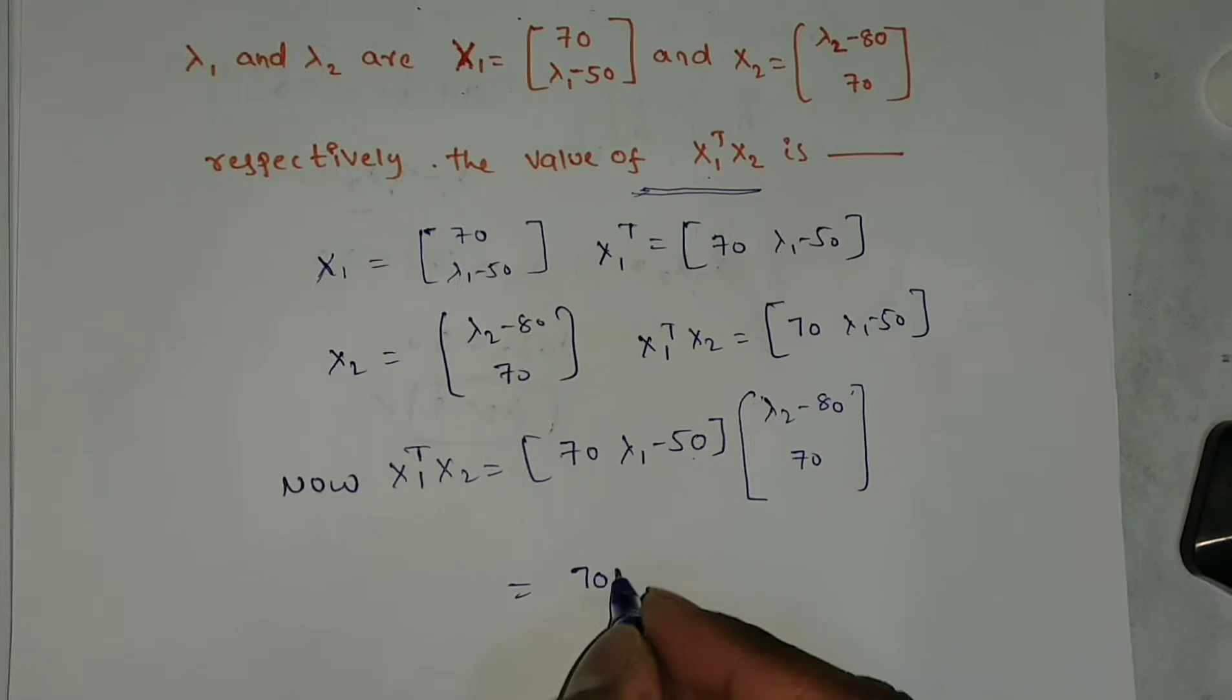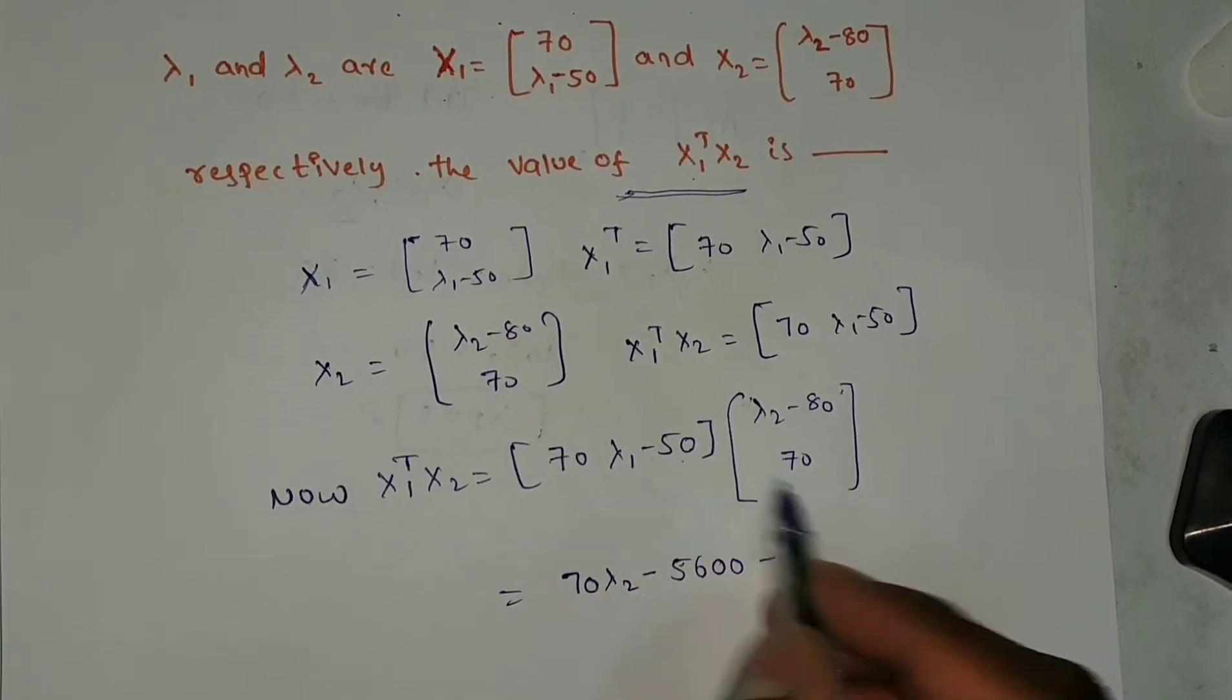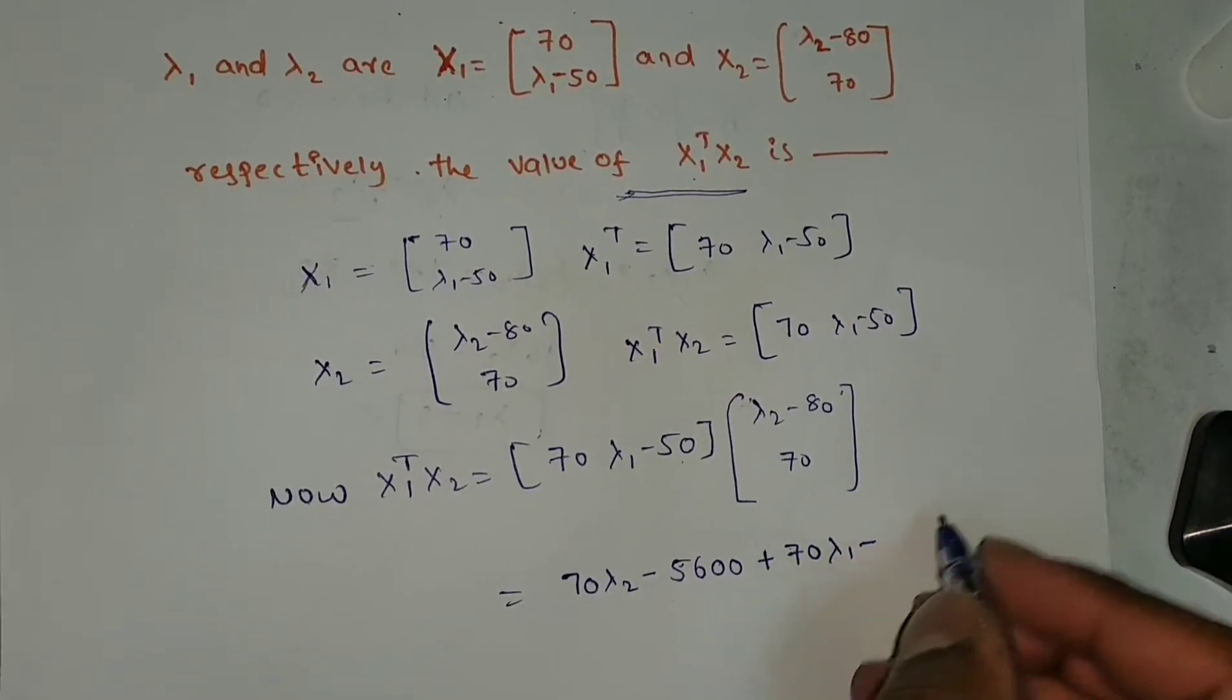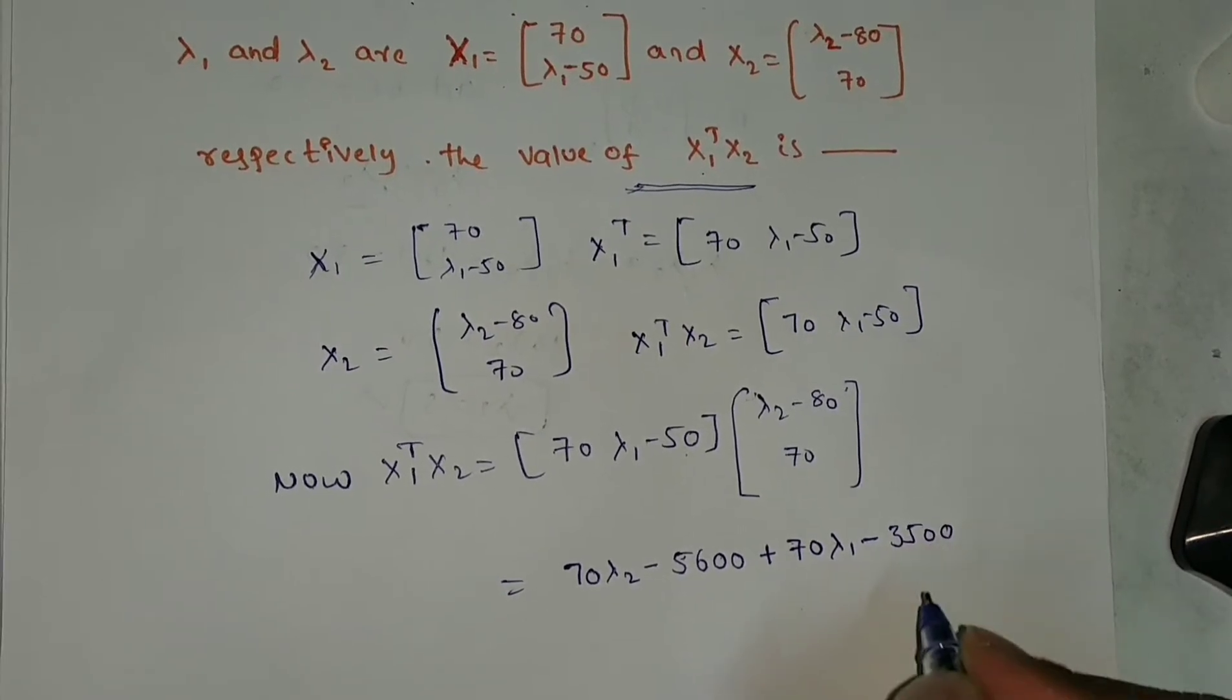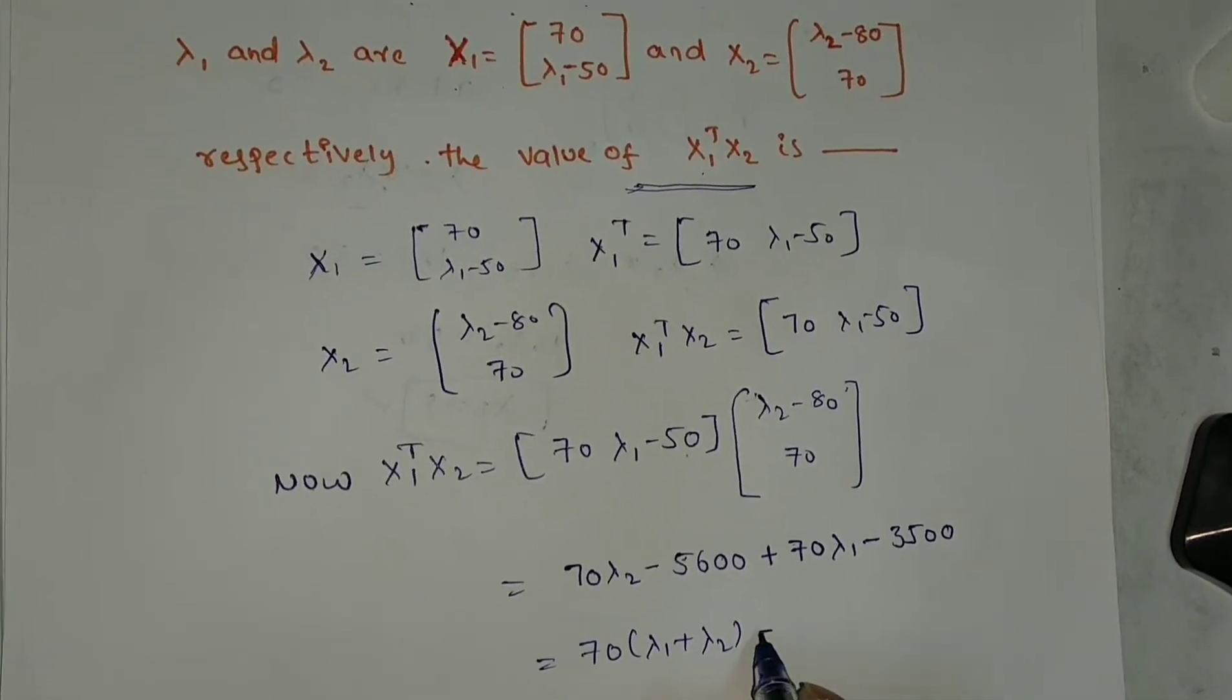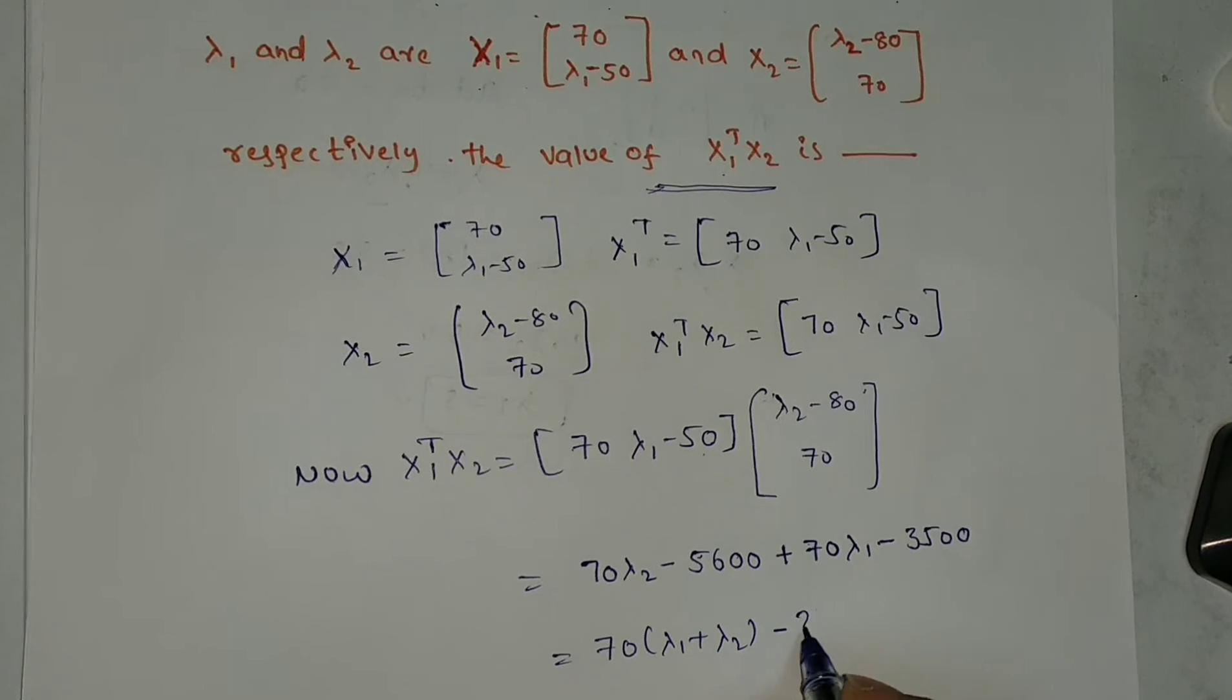70λ₂ minus 70 times 80 is 5600, plus 70 into λ₁, 70λ₁ minus 50 into 70 is 3500. Now you see, 70 is a common factor. 70(λ₁ + λ₂) minus 5600 minus 3500, which is 9100.